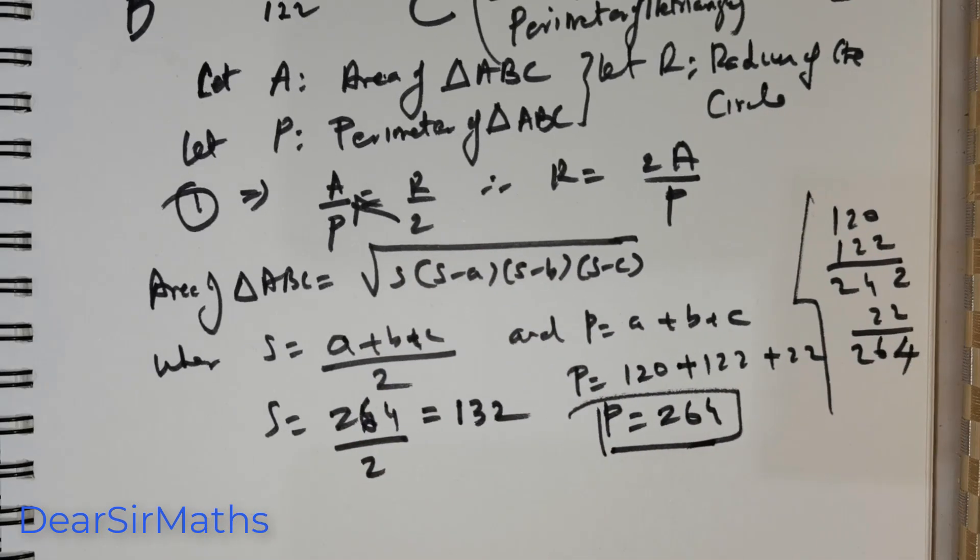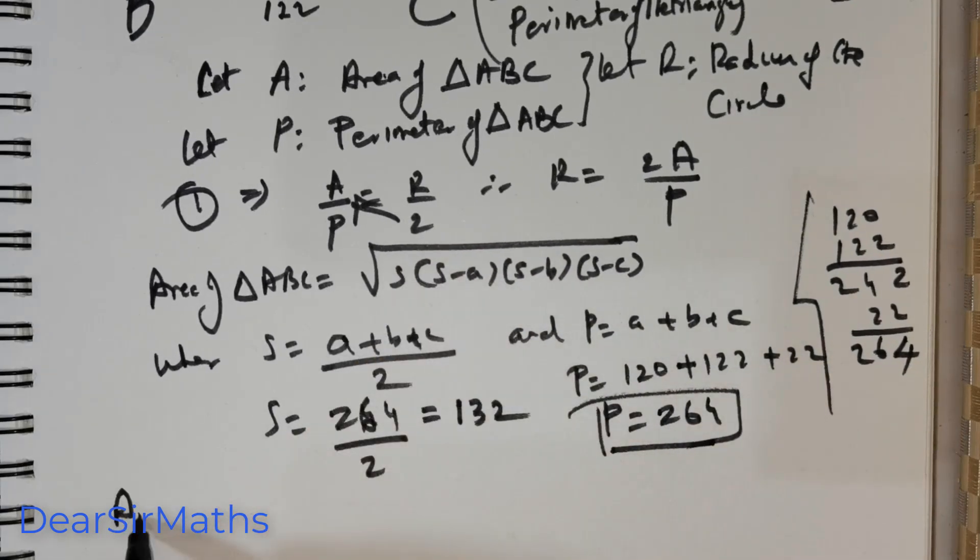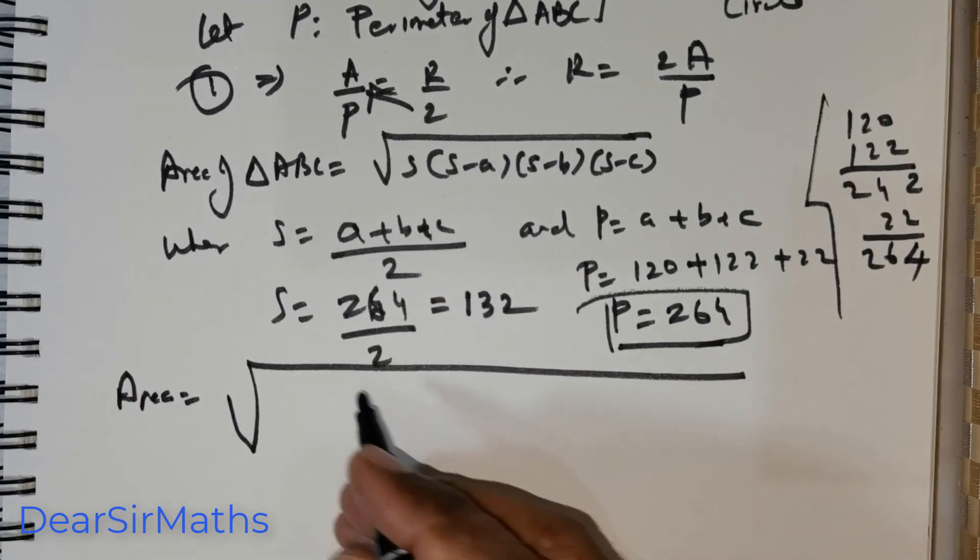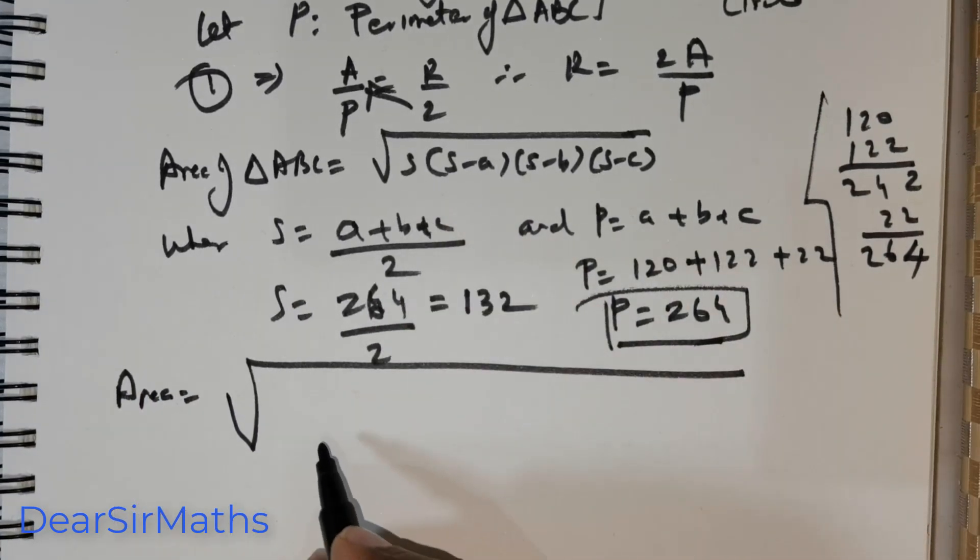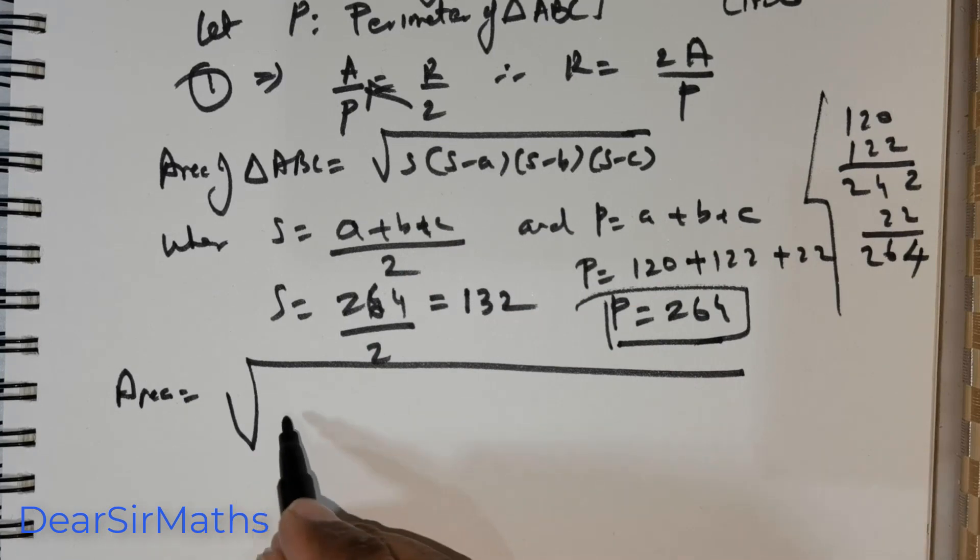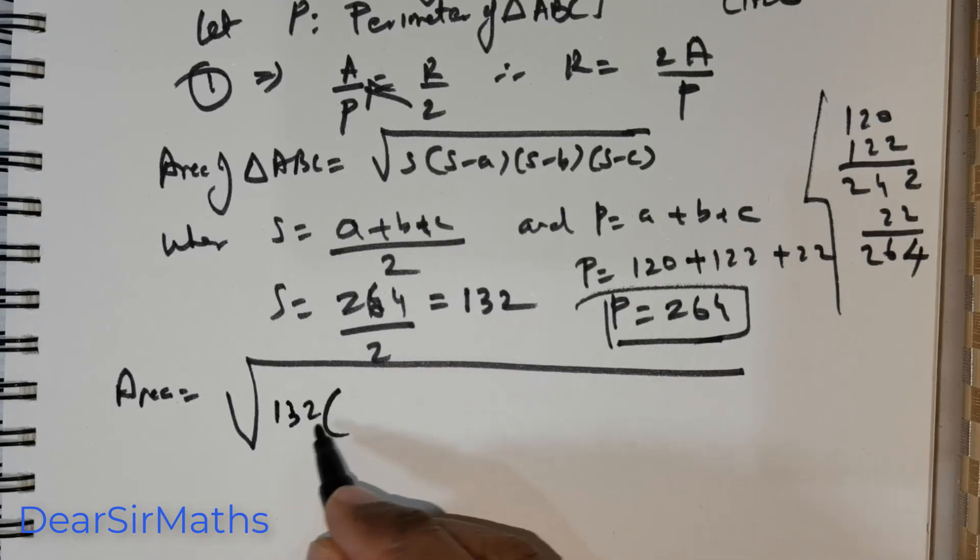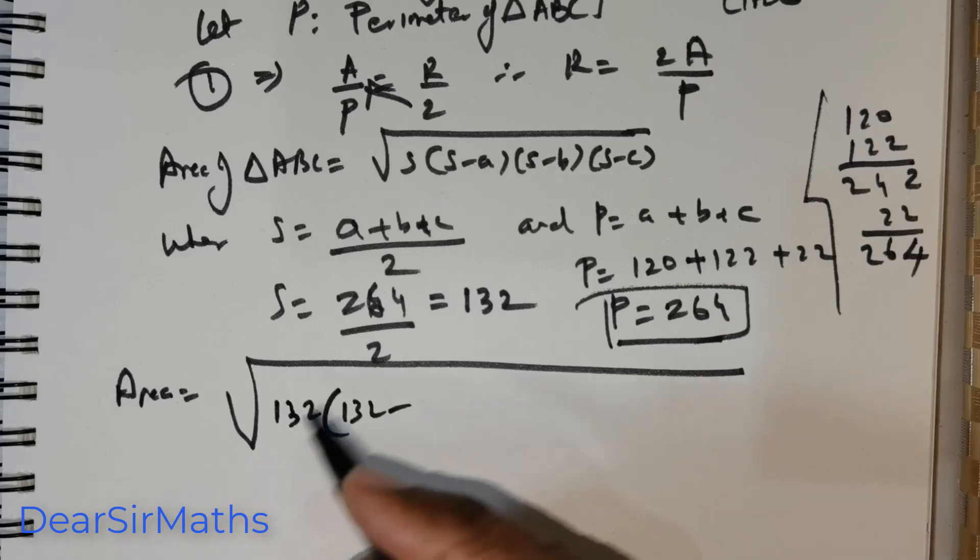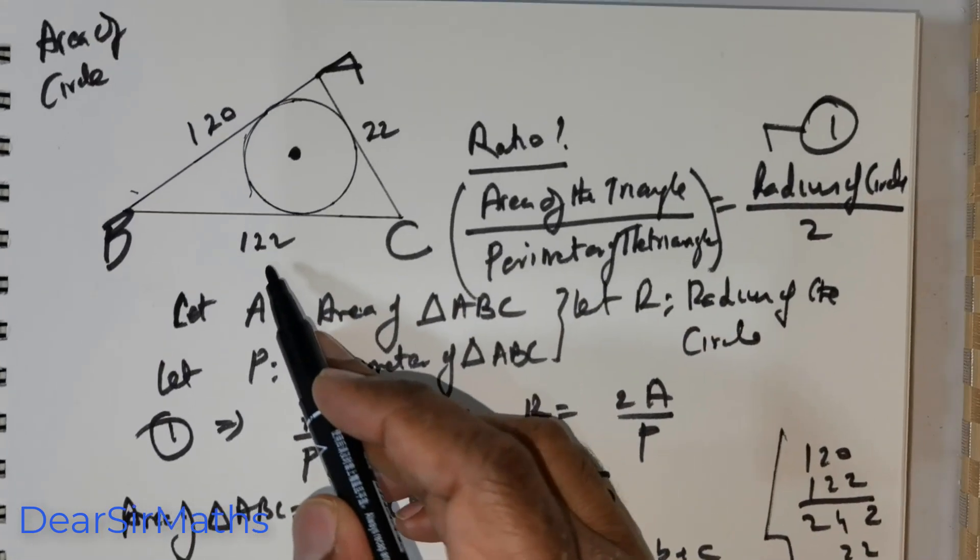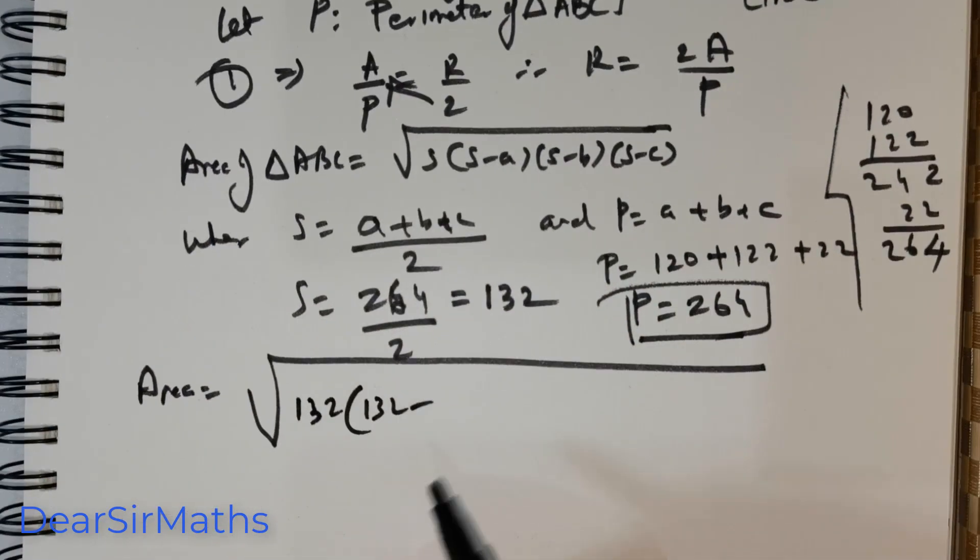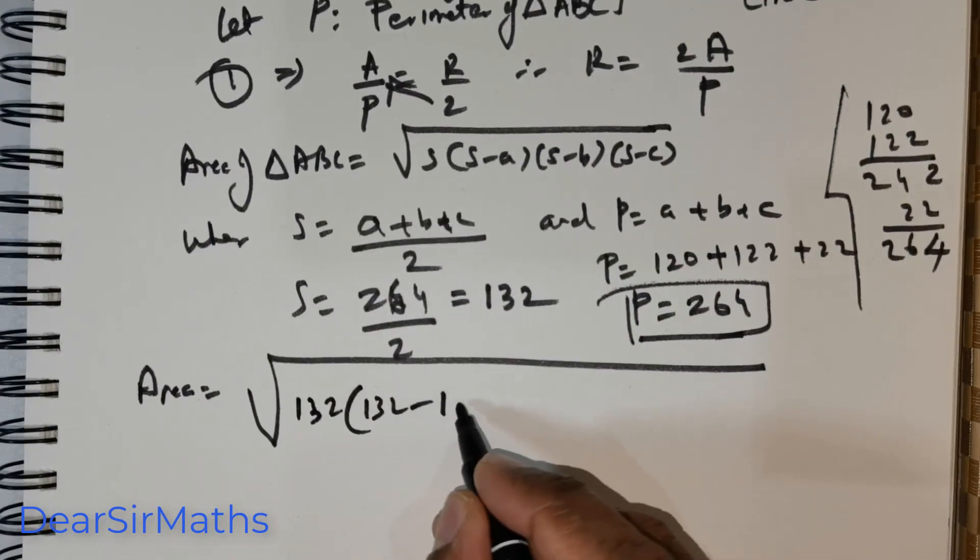Now, we need to find out the area. So, area is equal to, okay, we can just place in the values and simplify. So, S is 132. So, I'm just going to place 132 times 132 and all the sides. We got 122, 120 and 22. It doesn't matter in what order. Just place the sides.